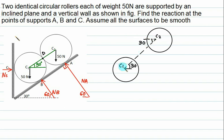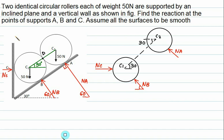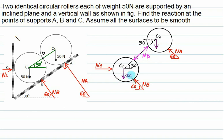Nc acts on cylinder C1. Nb passes through the center of the cylinder and makes an angle of 60°. This cylinder pushes the other cylinder — this one is action and this one is reaction — and this reaction occurs at point D, so we call it Nd. The weight acts vertically downward at 50 N.